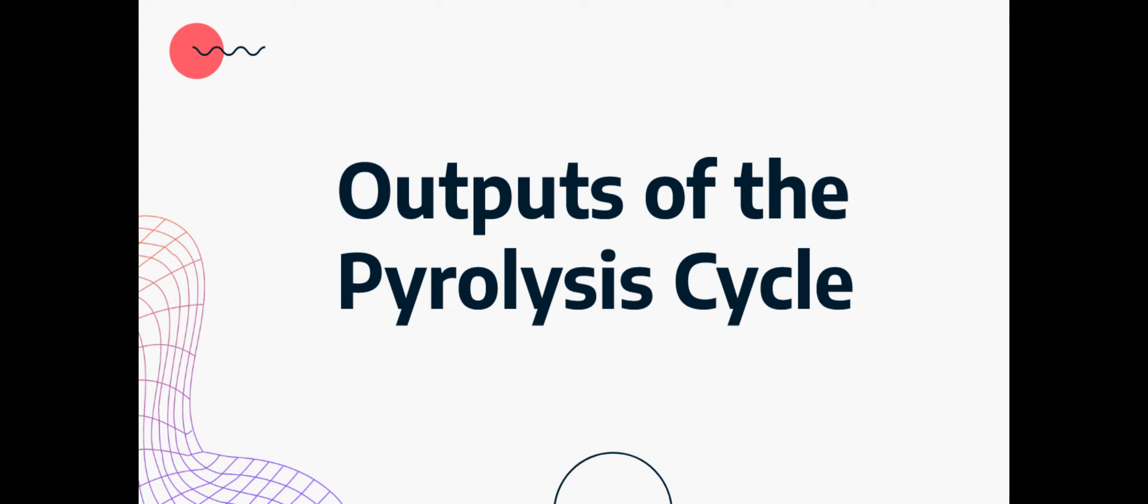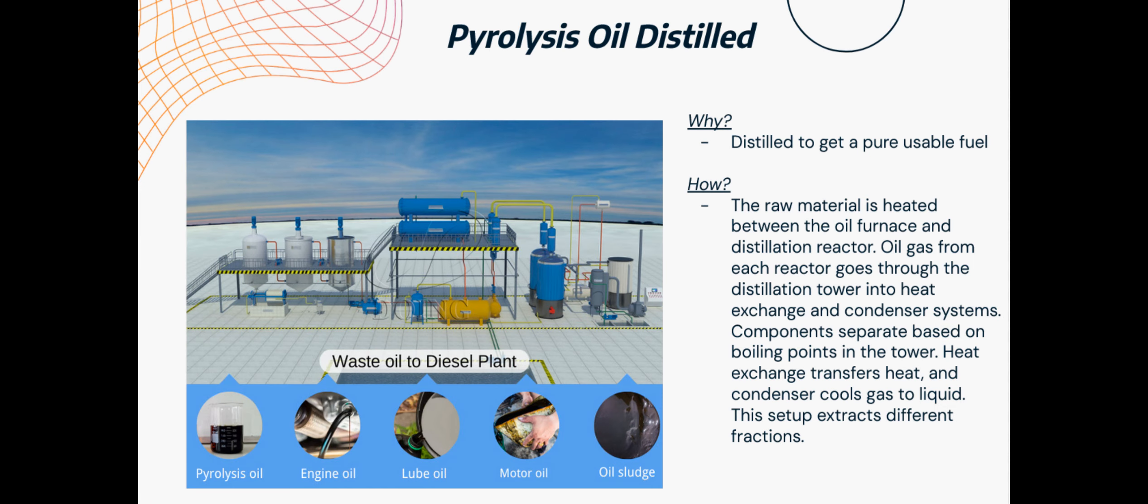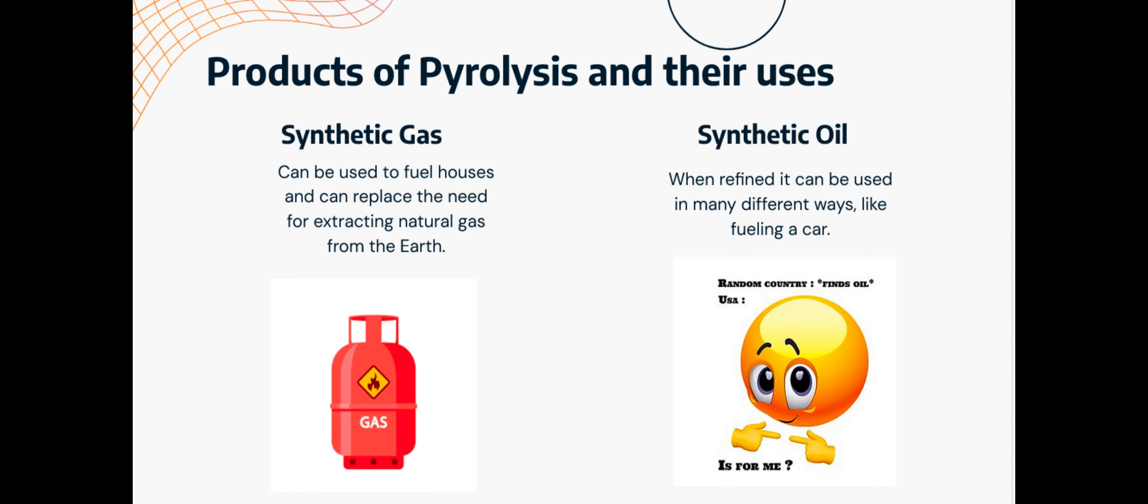The outputs of the pyrolysis cycle: Pyrolysis oil is distilled to get a pure and usable fuel. This is done by taking raw materials and heating them between the oil furnace and the distillation reactor. Oil gas from each reactor goes through the distillation tower into the heat exchange and condenser systems. Components separate based on boiling points in the tower, heat exchange transfers heat, and condensers cool gases into liquids. This setup extracts different fractions. Products of pyrolysis are synthetic gases and synthetic oils. Synthetic gas can be used to fuel houses and can replace the need for extracting natural gas from the earth. Synthetic oil, when refined, can be used in many different ways, such as fueling a car.